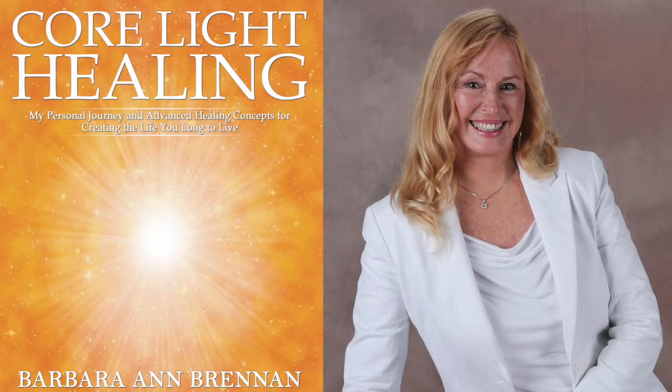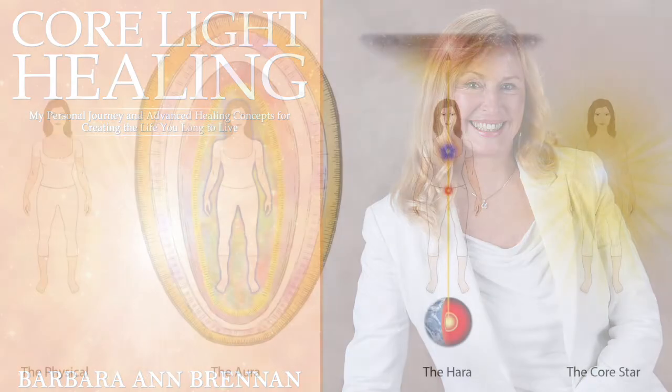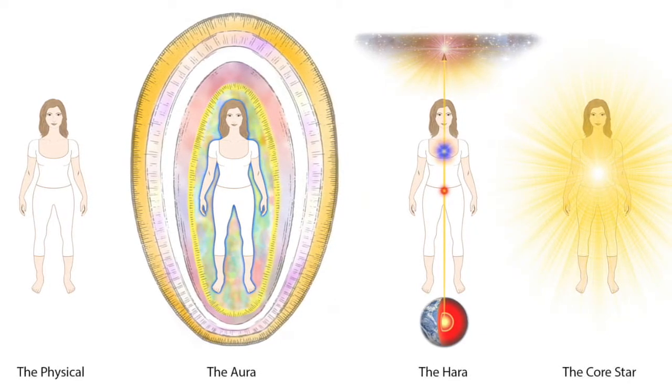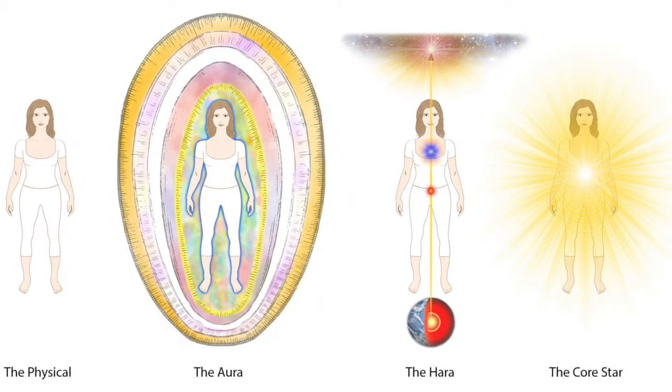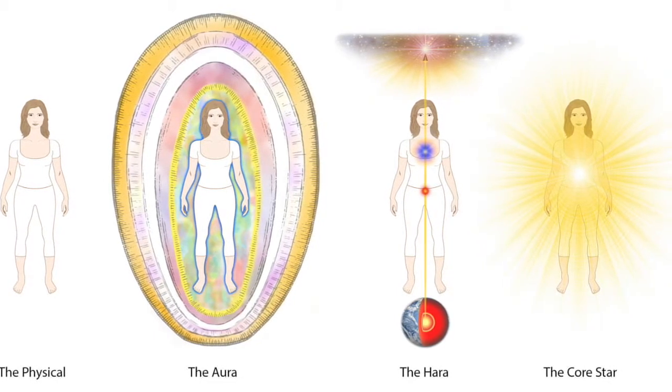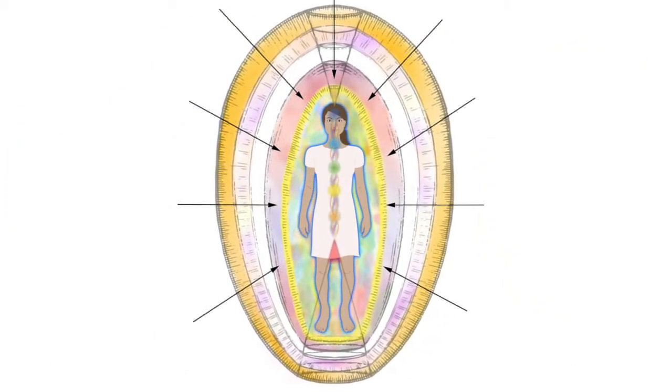Core Light Healing completes the trilogy that was started with Hands of Light and Light Emerging. In Part One of Core Light Healing, Barbara Brennan describes how the creative process flows through the human energy consciousness system.